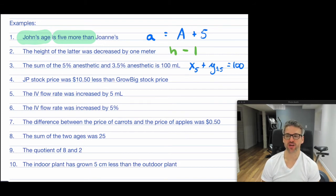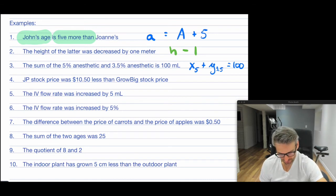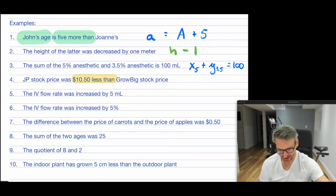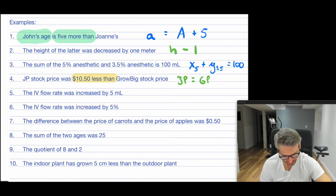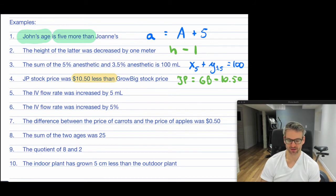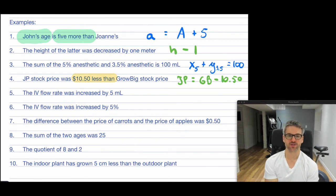The fourth one: "JP stock price was $10.50 less than Grow Big stock price." The key here is "less than." So the JP stock — JP equals Grow Big minus 10.50, because it is $10.50 less than the Grow Big one. Notice that the subtraction goes after.